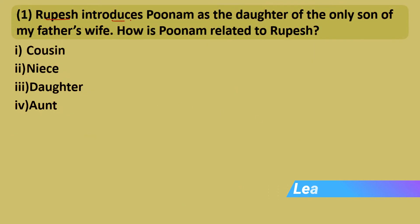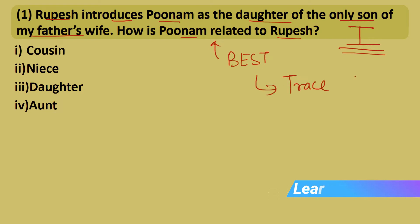Question 1: Rupesh introduces Poonam as the daughter of the only son of my father's wife. How is Poonam related to Rupesh? Welcome to the first category of sums. In this category, one person introduces another person and relates them to their own family. The best way to handle these sums is to trace back from last.